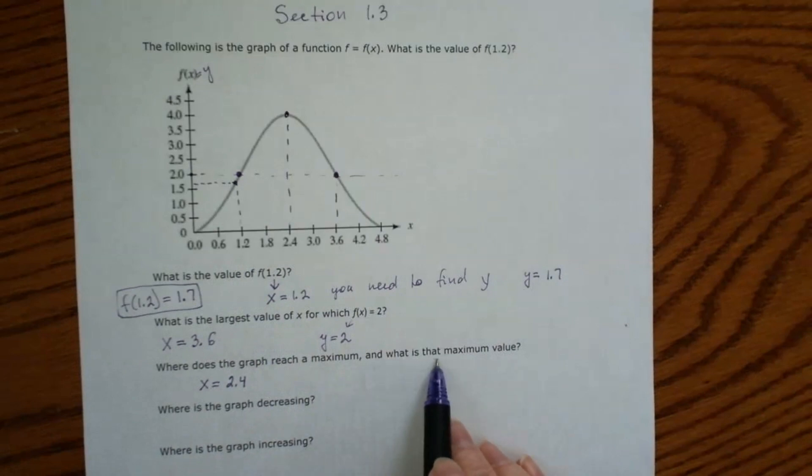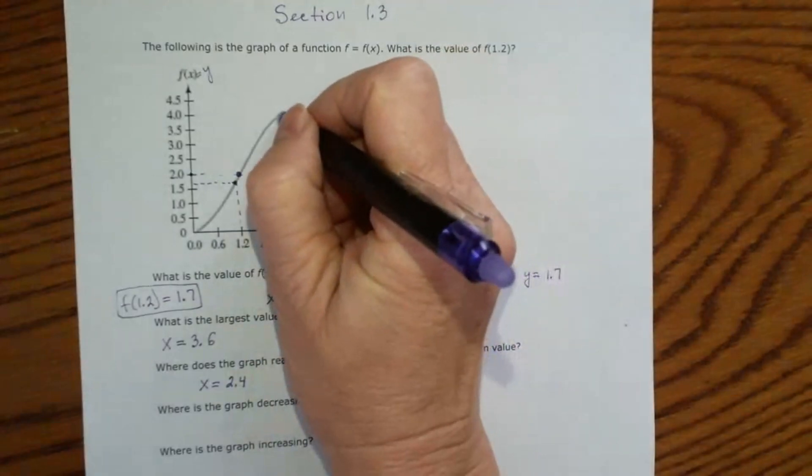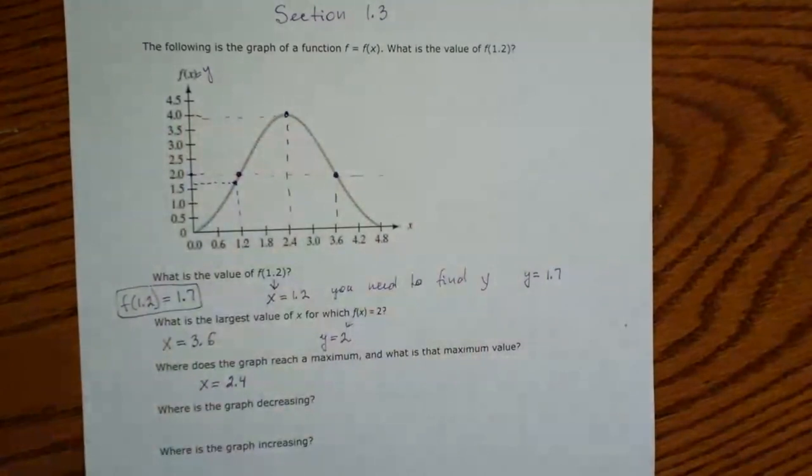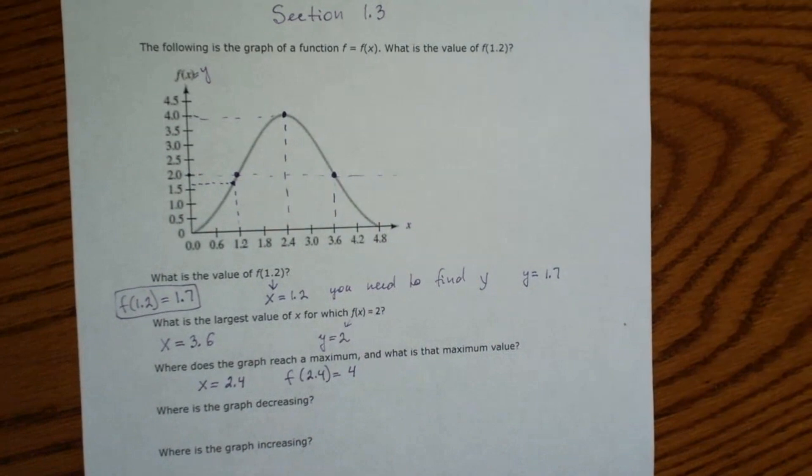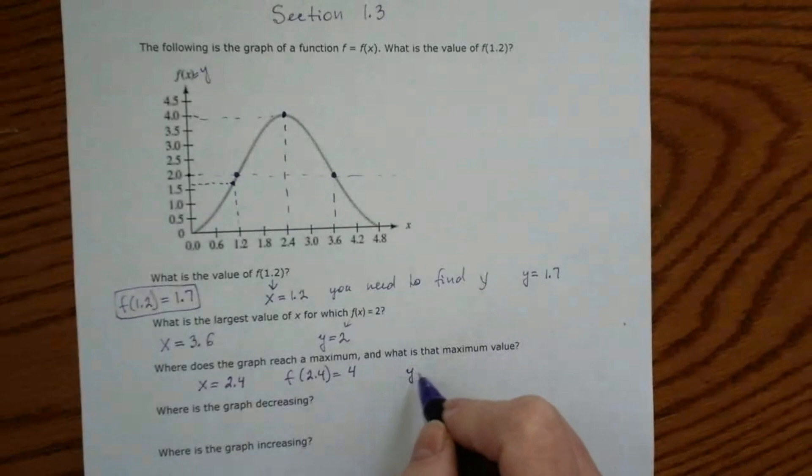And what is that maximum value? It means we need to find the y-coordinate of this point that is 4. So we can write it down in several ways. We can write it down this way: f of 2.4 is equal to 4, or we can say y is equal to 4. It means exactly the same.